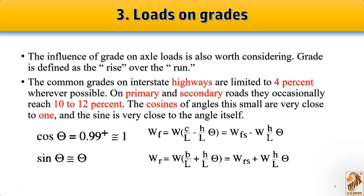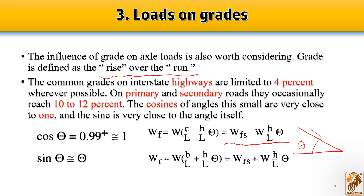For the third case — load on the grade — the vehicle is resting on a road at some angle theta, which is the rise-over-run condition. Common grades for highways are kept at four percent. The equations are: Wfs = W·c/L − W·h/L·theta, and Wrs = W·p/L + W·h/L·theta. By reducing aerodynamic drag or considering acceleration as zero, we can determine all three equations from the general formula.